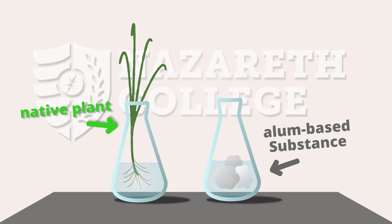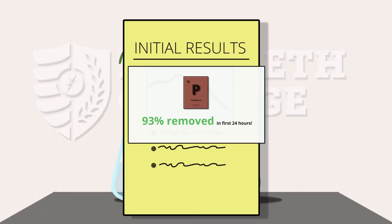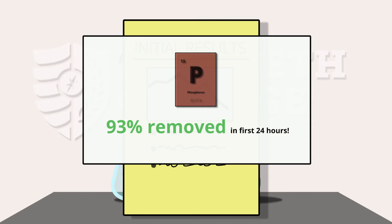After 24 hours of being exposed to these two substances, we've shown that 93% of the phosphorus was removed from the water.